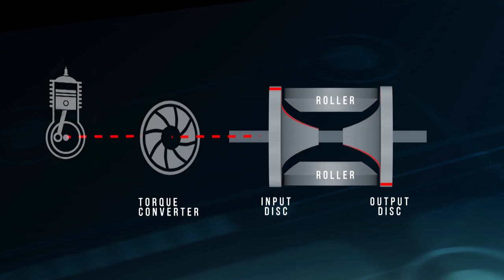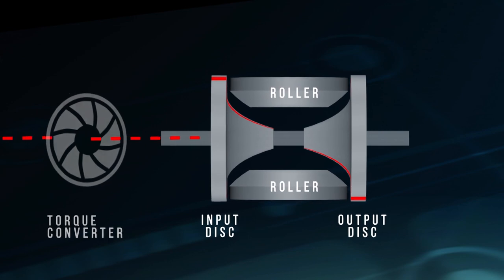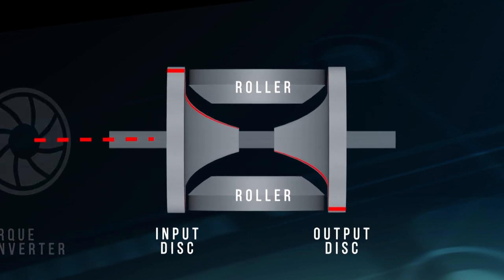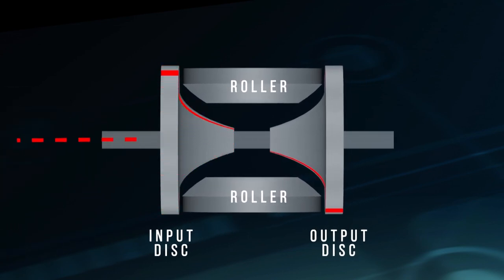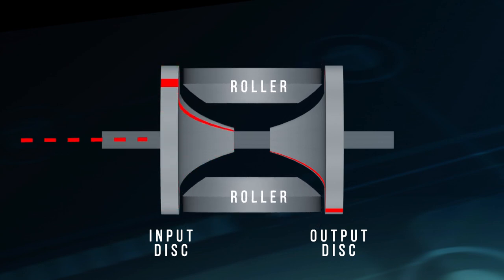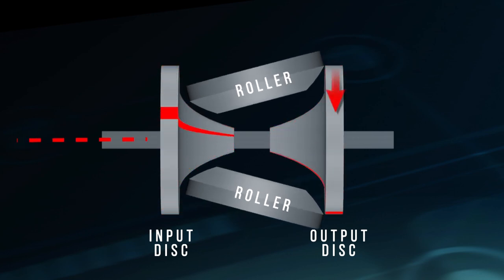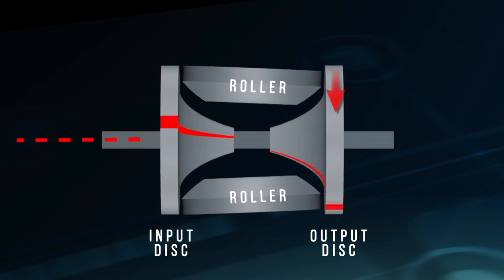In a toroidal CVT, torque from the engine is transmitted to the transmission input via a torque converter. Drive torque passes through an input disc or cone to a set of movable rollers before exiting at the output disc. In this example, the input disc speed remains constant. Varying the angles of the rollers seamlessly changes the speed and torque of the output.